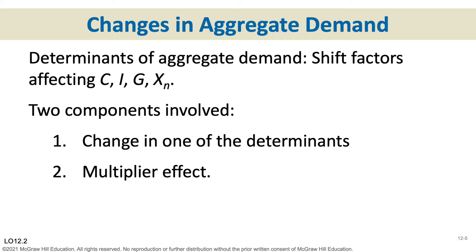Now we think about what could shift the aggregate demand curve. When we shifted the single-product demand curve to the right, we were increasing demand for that product — that learning still holds. If we shift the aggregate demand curve to the right, it means we're purchasing more GDP at all possible prices. Anything that causes us to change our aggregate expenditures will shift the aggregate demand curve — spending more shifts it right, spending less shifts it left.